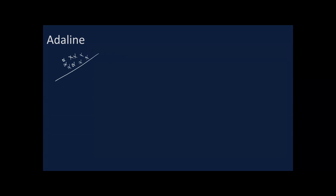Last time we talked about Adeline, and we said that we are using Adeline for classification. Assuming that we have two classes and we have our data scattered, we could draw a decision boundary between them to separate these two datasets. We also showed that we can get the equation of this decision boundary. We have a cost function, and we can take the derivative of that cost function, then change the weights accordingly.